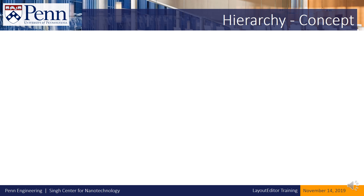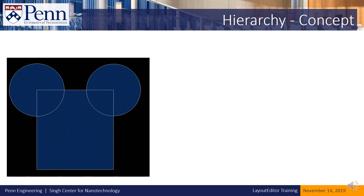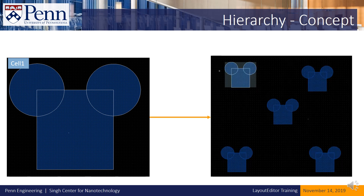Before we jump in and start using Layout Editor, there are a couple of foundational concepts to lay the groundwork for. The first is the concept of hierarchy. Anytime we draw anything in Layout Editor, we always do so in a cell. For example, a box and two circles drawn in a cell I'll call Cell 1. From there, I can create a new cell — Cell 2 — and create references to the first cell. These look like unique objects, but they're actually just references to Cell 1.